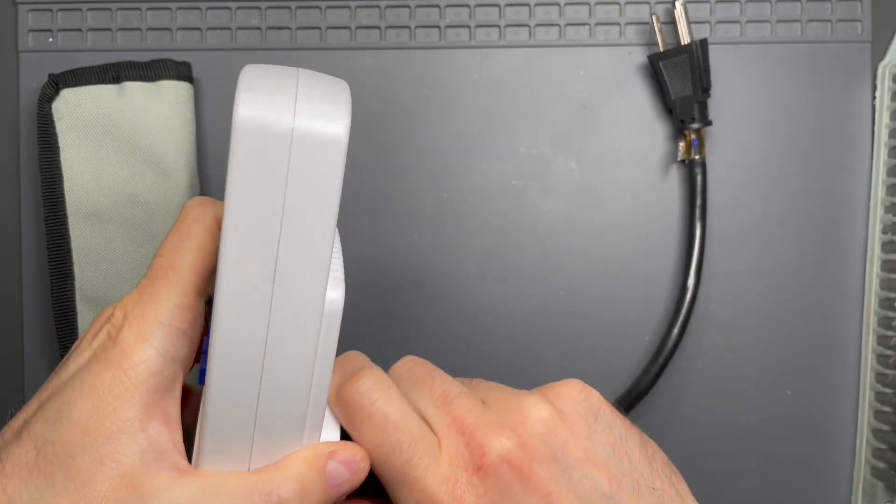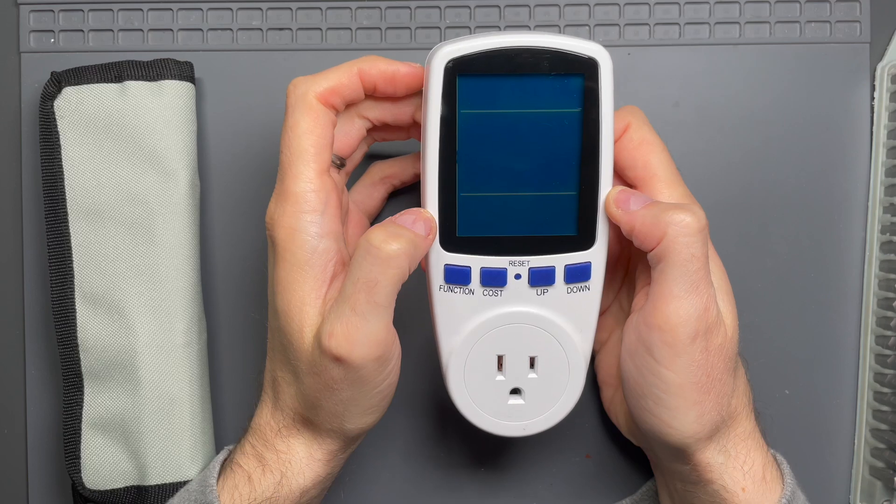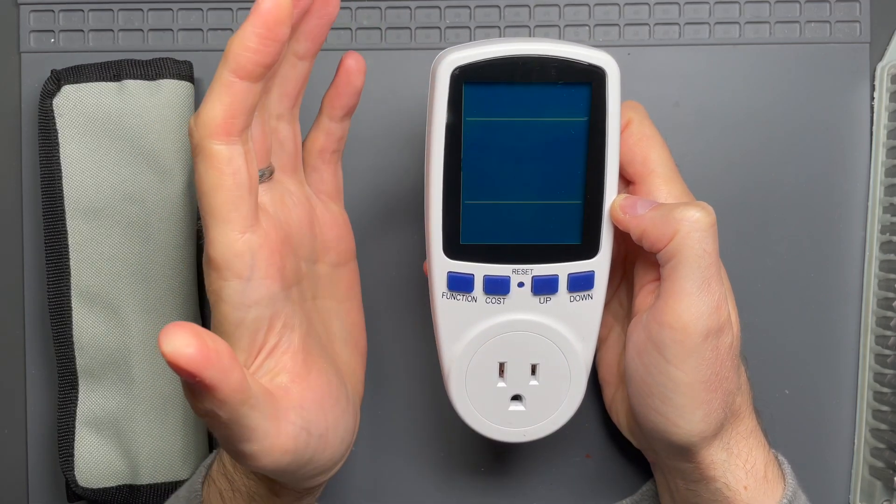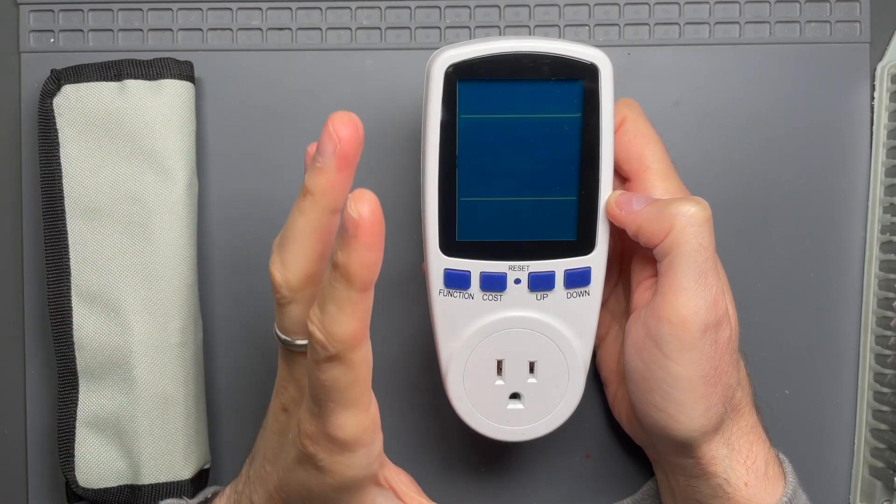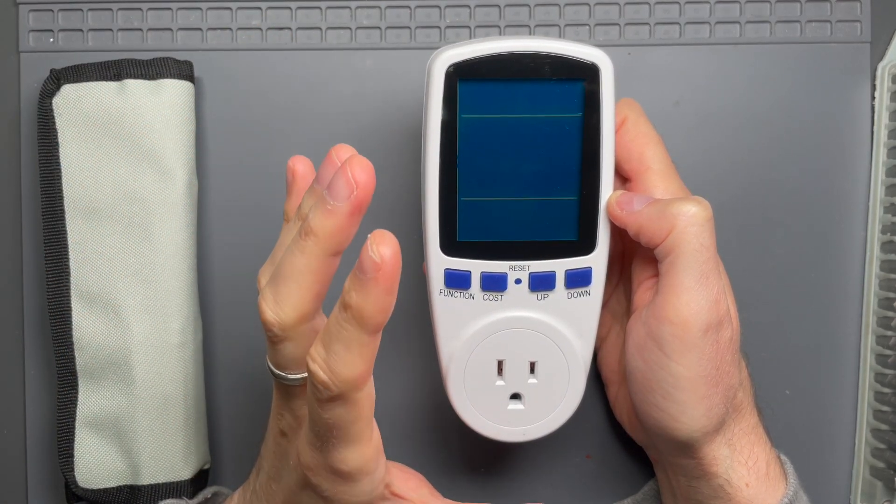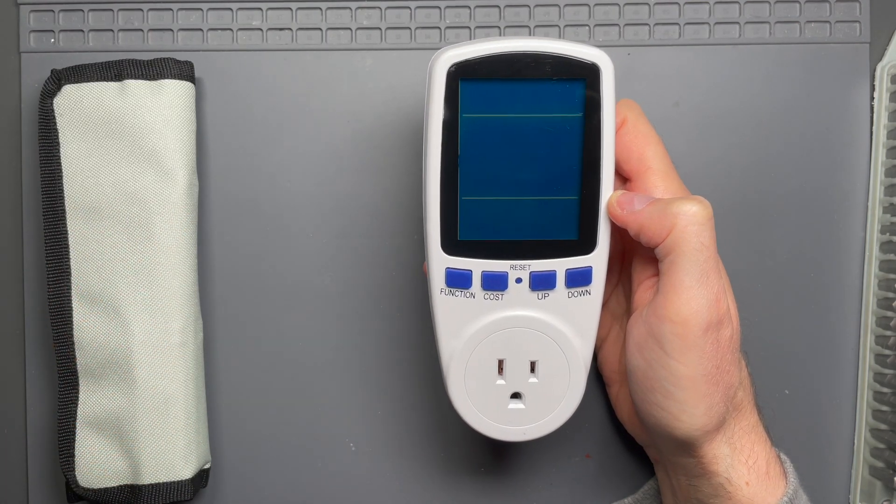I said in a video before when I was taking apart the kilowatt that there were features I was looking for in an inexpensive power analyzer that the kilowatt didn't have. Namely, it didn't have a backlight. It didn't have a way to actually remember the accumulated measurements once power was cut from it.